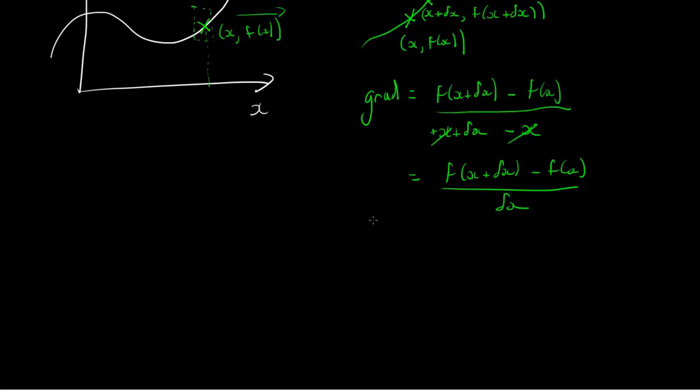So we can say that dy by dx, which is the notation we use for gradient once we've taken the limit, is equal to the limit as delta x tends to zero, i.e., we've taken delta x to be zero now, of f of x plus delta x minus f of x, all divided by delta x.